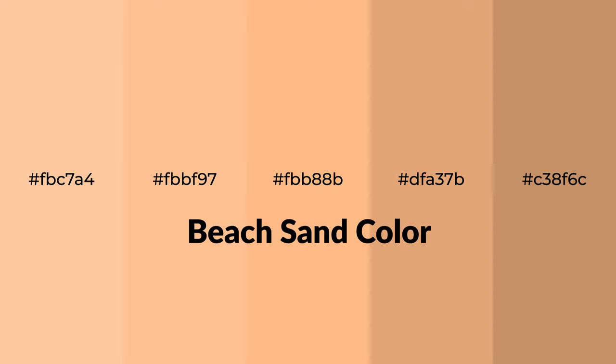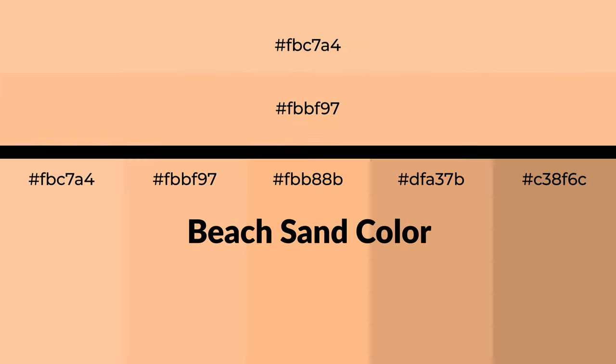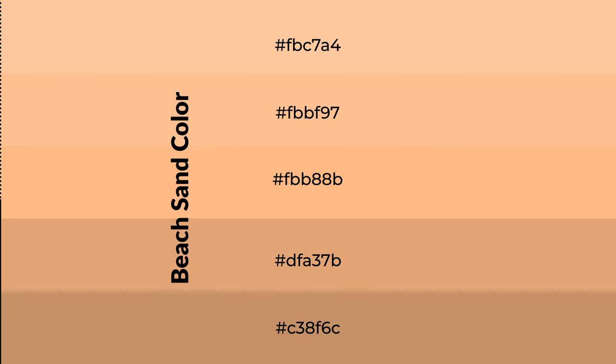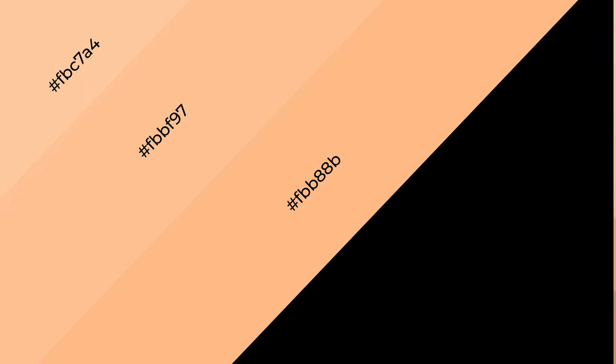Warm shades of beach sand color with an orange hue. To generate tints of a color, we add white to the color. Tints create light and exquisite emotions. To generate shades of a color, we add black to the color. Shades are used in patterns, 3D effects, and layers — they create depth and drama.